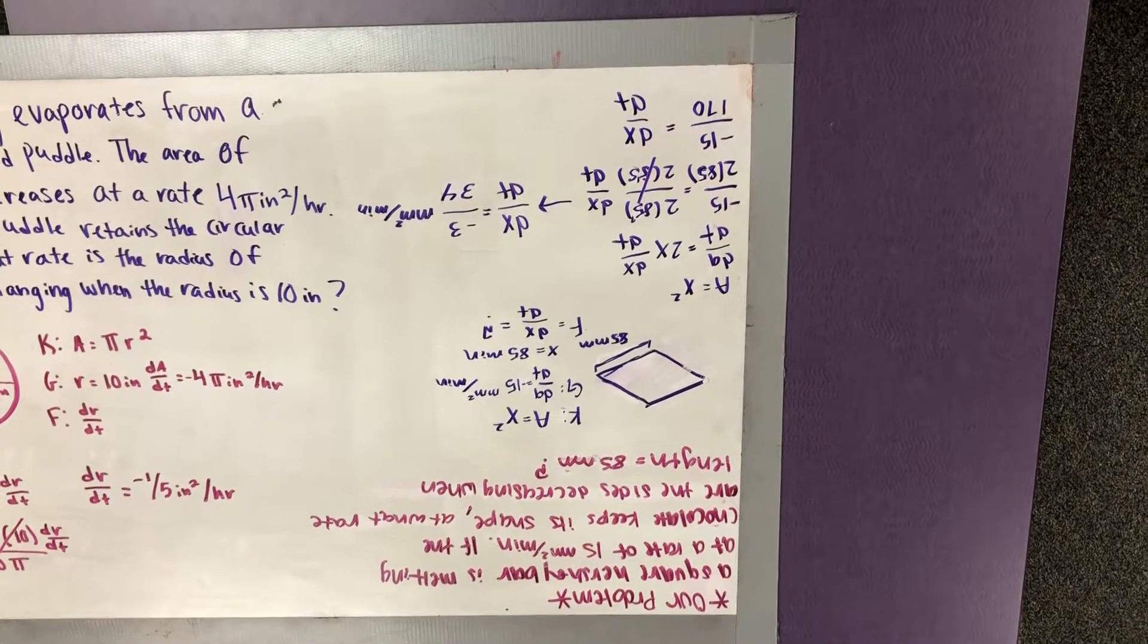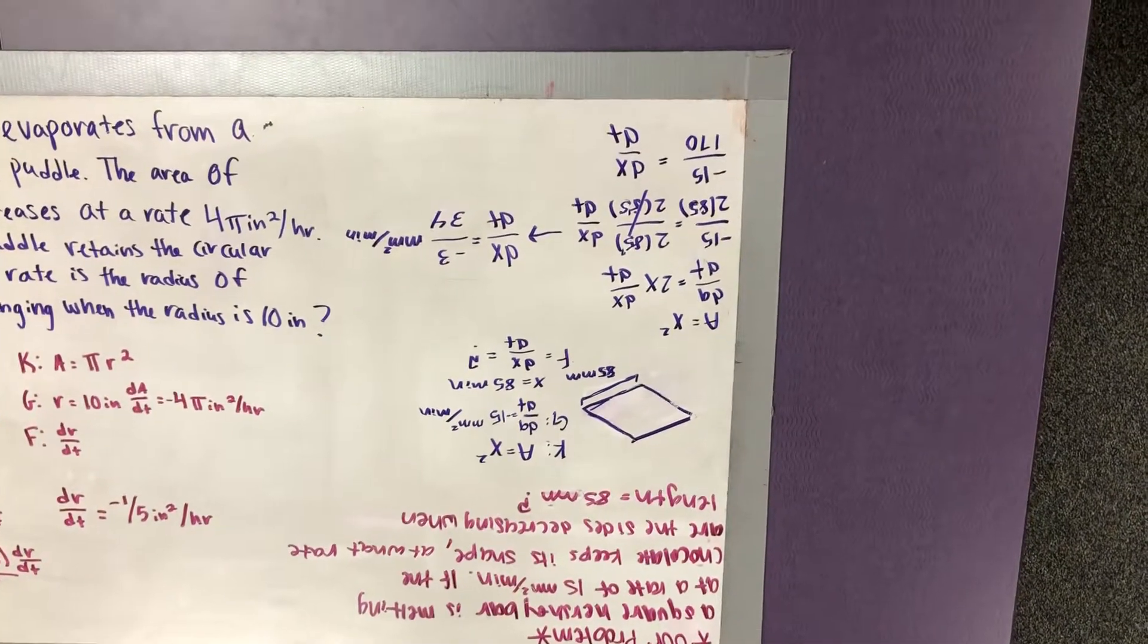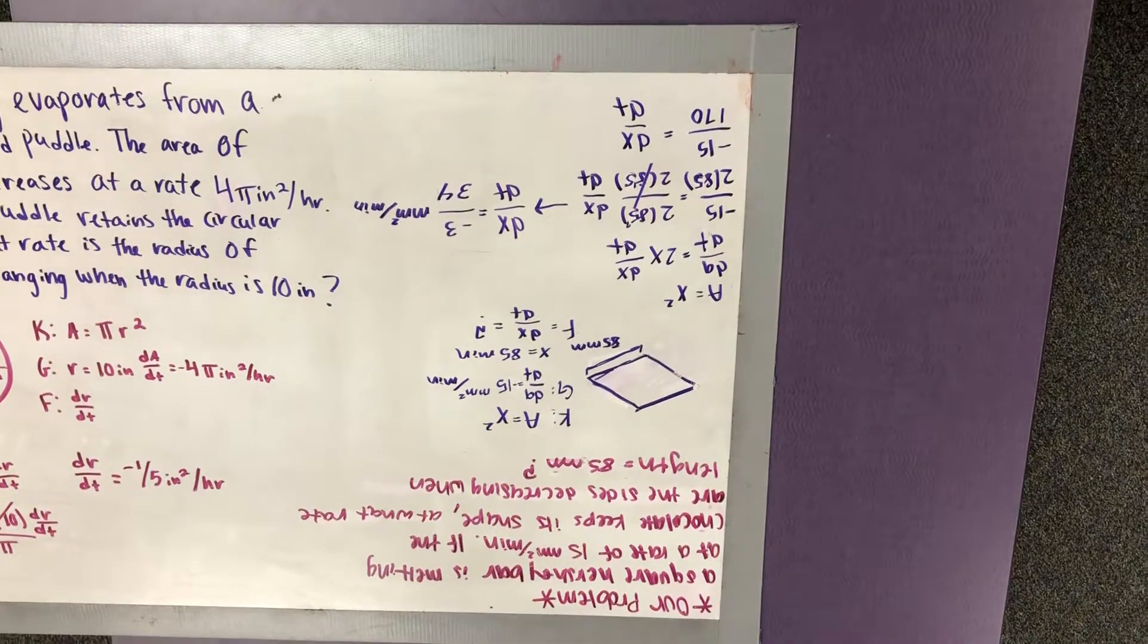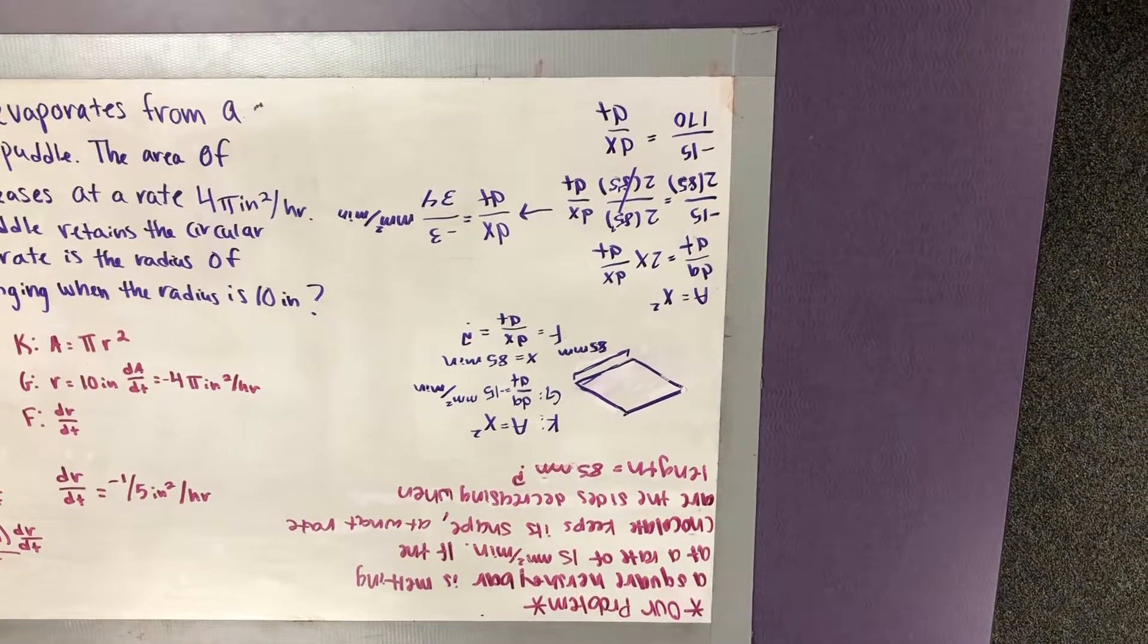Our finding, we're trying to find dx over dt. We begin with our area equation, which is A equals side squared, and then we find the derivative of that, which is 2x dx over dt.